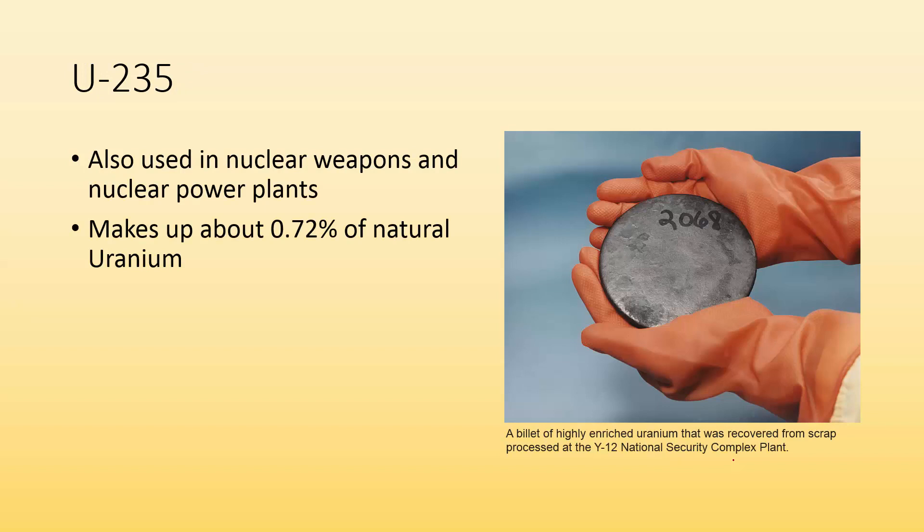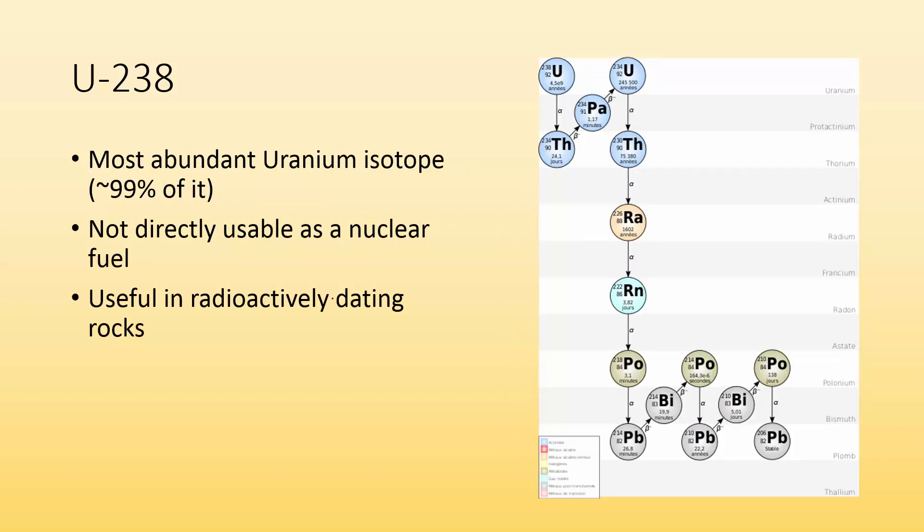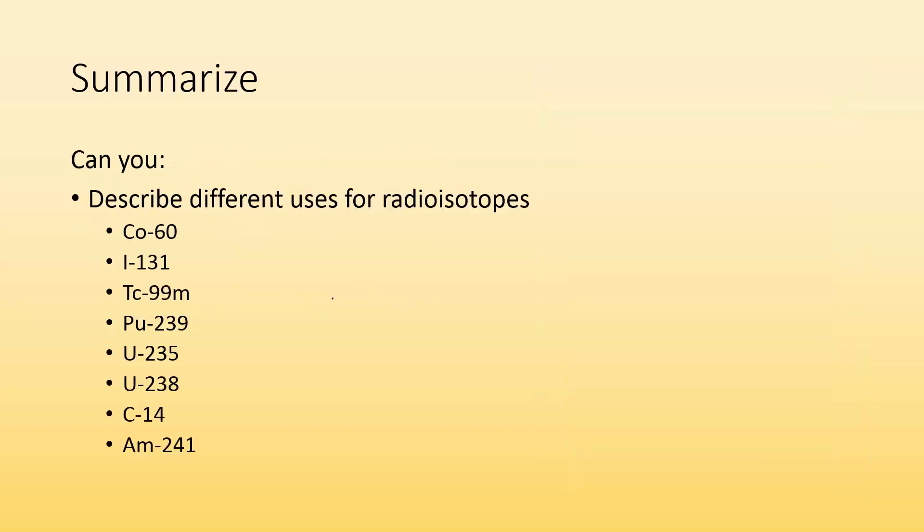We got uranium-235, which is also used in nuclear weapons and nuclear power plants. And it makes up about less than a percent of natural uranium. So in order to use it, we have to enrich it. If you've ever heard enriched uranium, that's what they're talking about. Uranium-238 is the most abundant uranium isotope. It's about 99% of it. And it's not directly usable as a nuclear fuel, but it's usable in radioactively dating rocks and stuff.